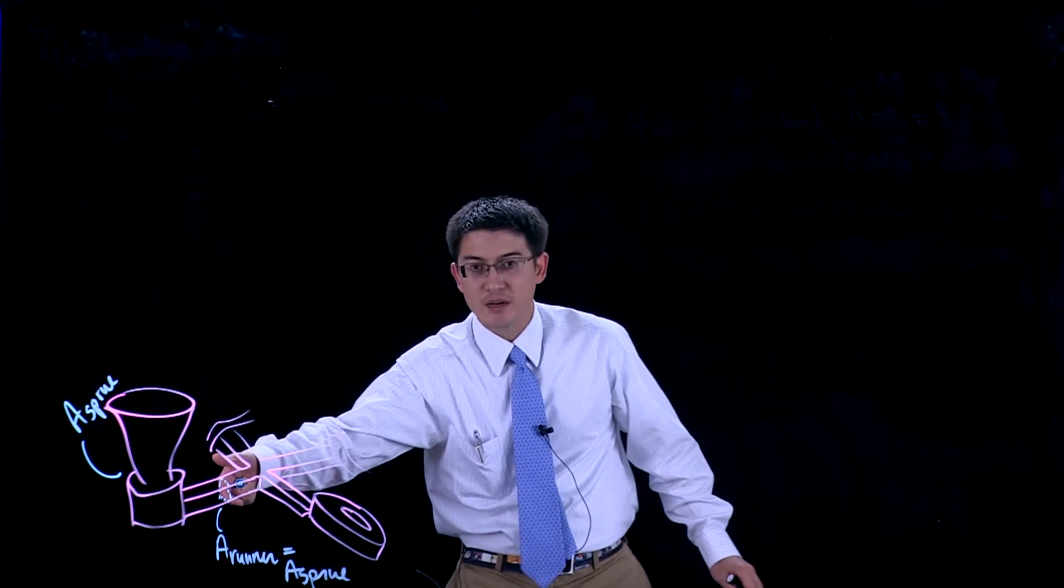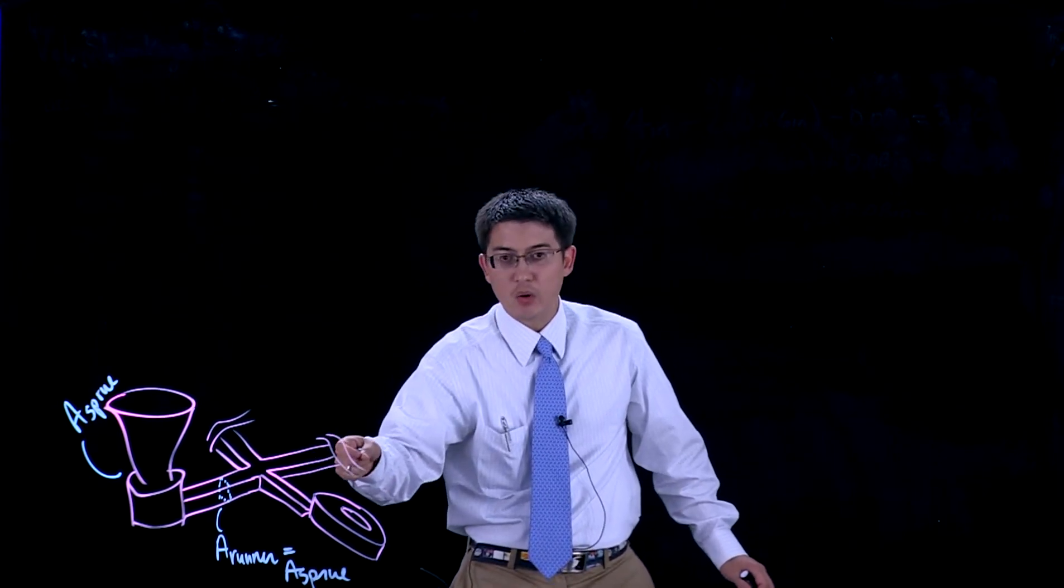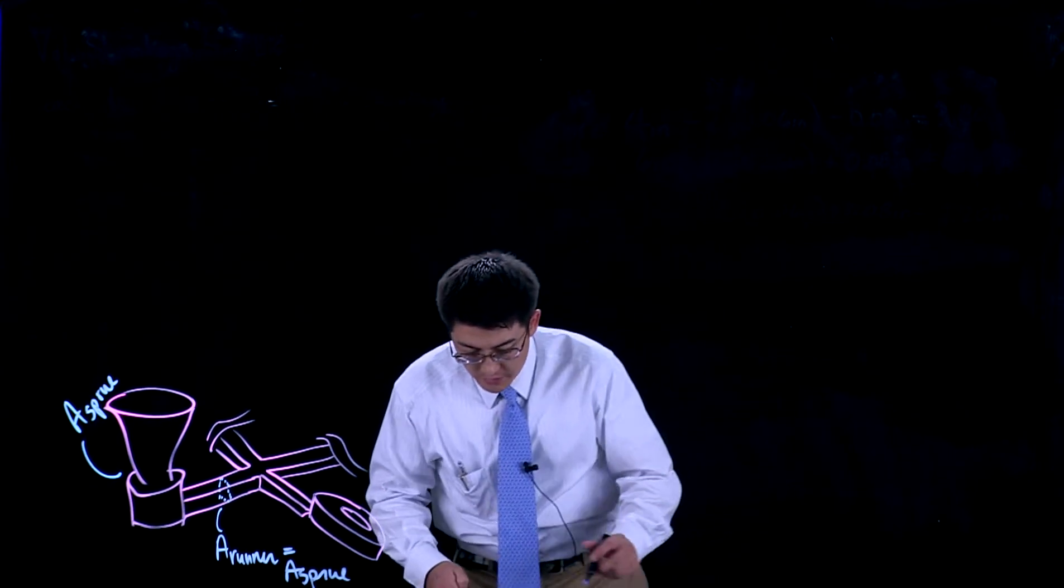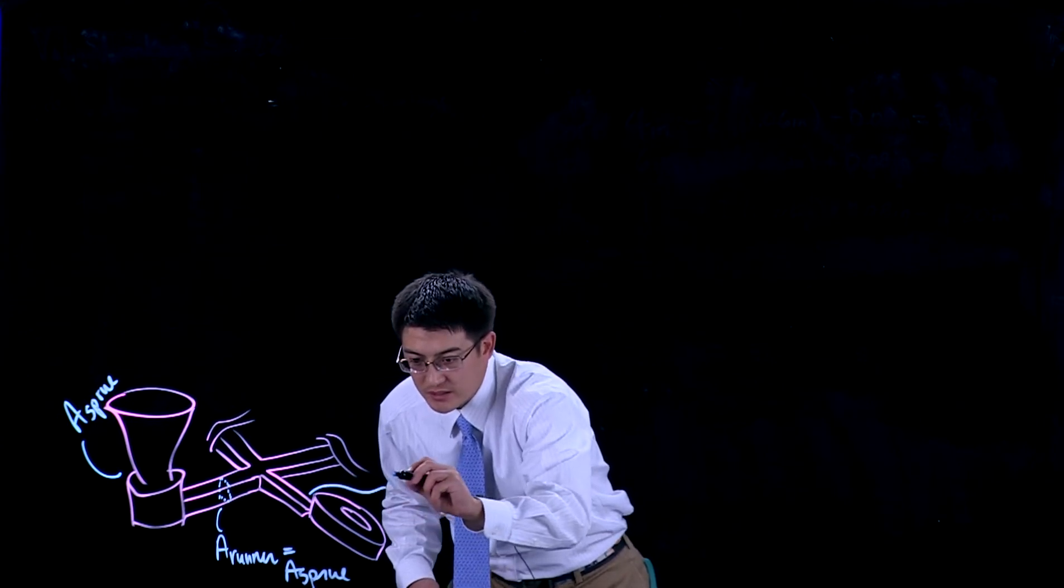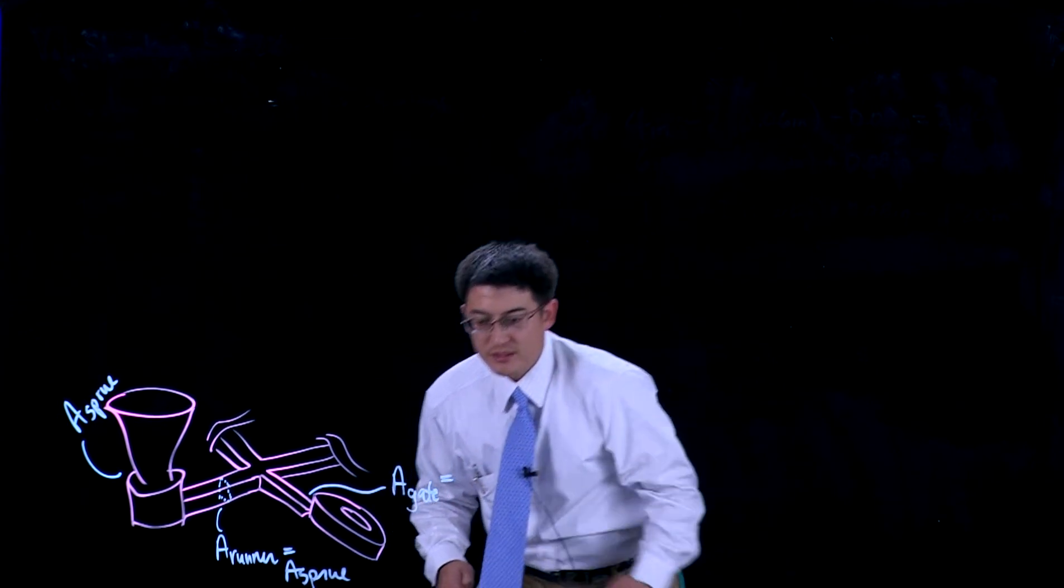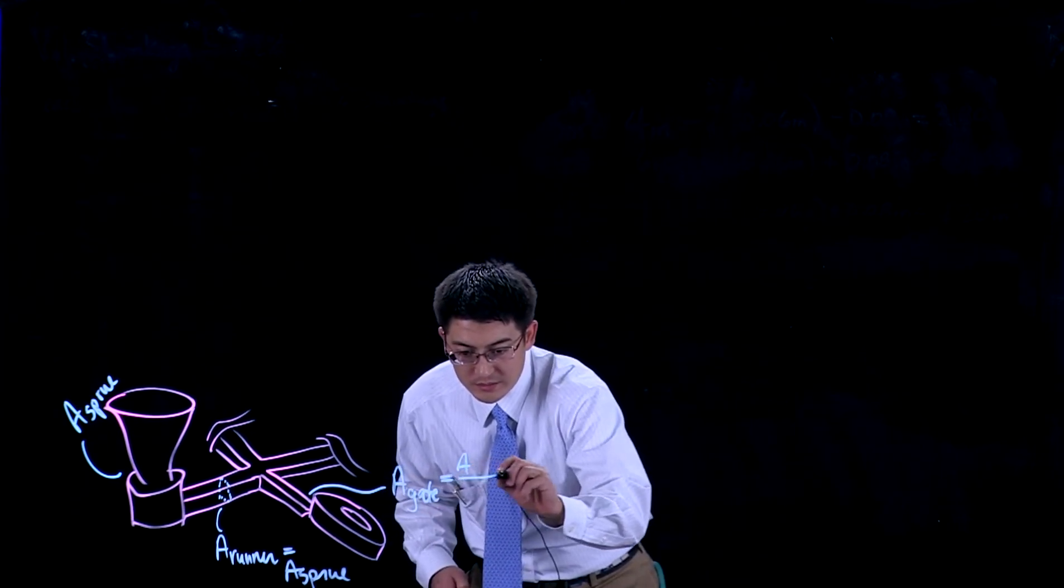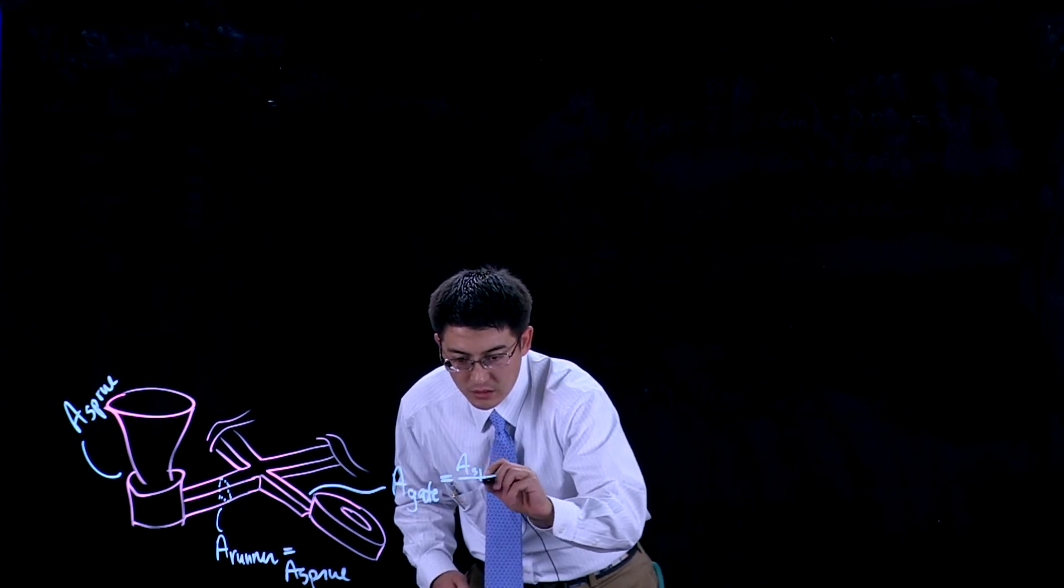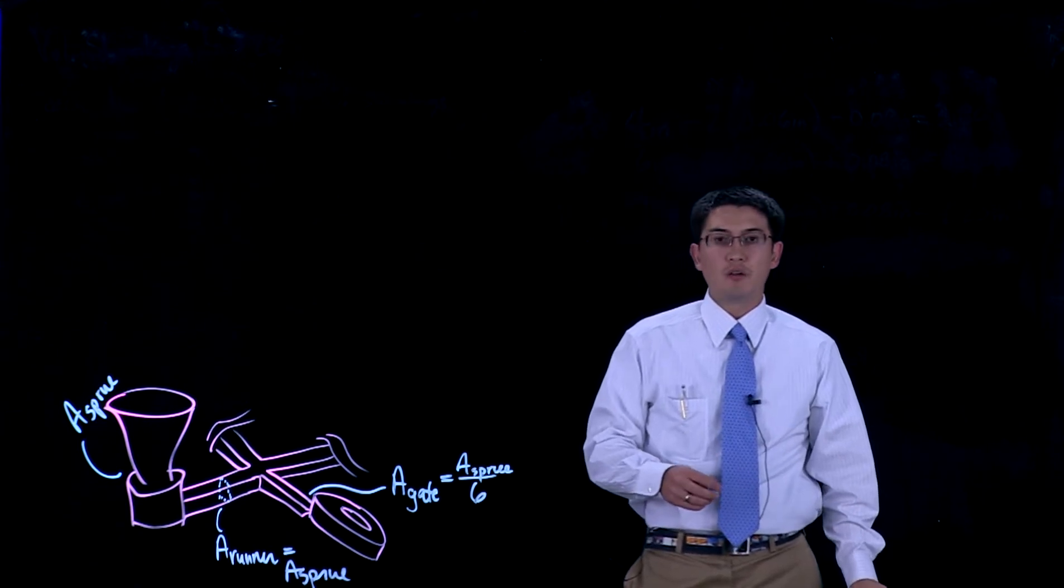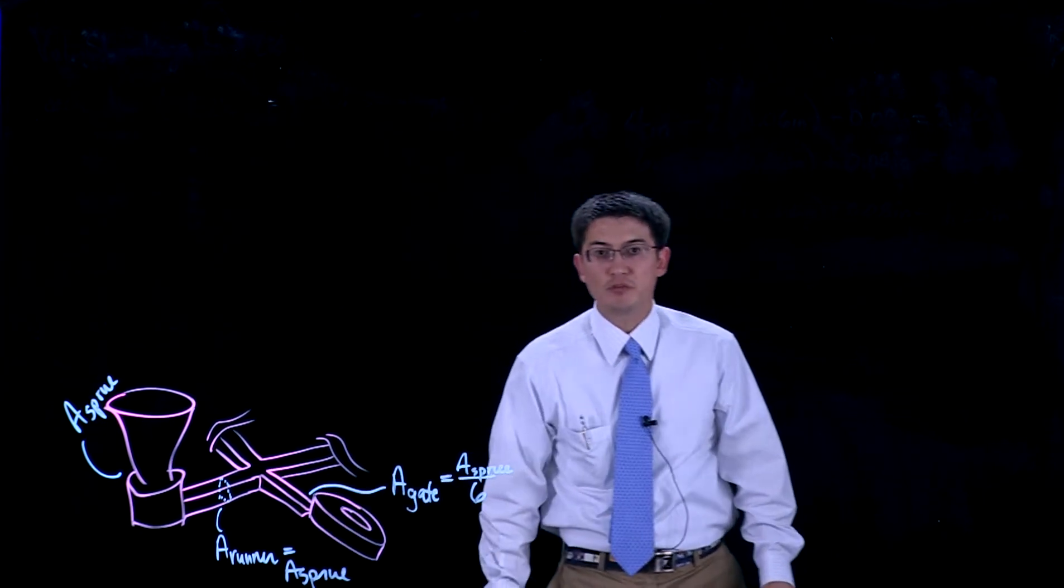Once this splits, however, however many parts you're going to be creating, the gate cross-sectional area, and we're going to have six parts as stated in the problem, needs to be one-sixth of the sprue area. That is to maintain equal flow rate.